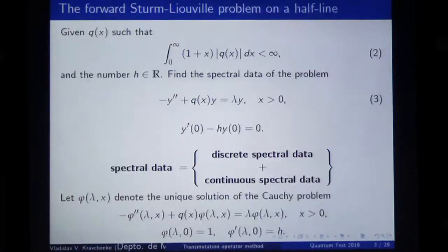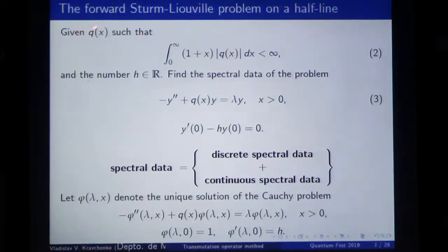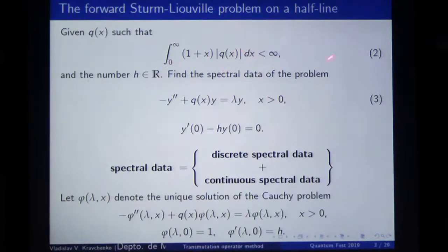So let us start with some classical stuff. I will consider first the forward Sturm-Liouville problem on a half line. We should consider this Schrödinger equation on the half line, where X is greater than zero. Q satisfies this condition, which means that Q decays sufficiently fast at infinity.